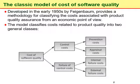The first model we will discuss is called the classic model. The classic quality cost model was developed in the early 1950s by Feigenbaum and others, and provides a methodology for classifying the costs associated with product quality assurance from an economic point of view. This model classifies costs related to product quality into two general classes.